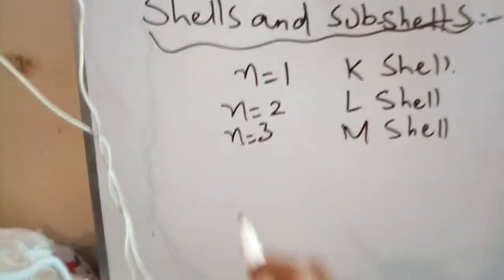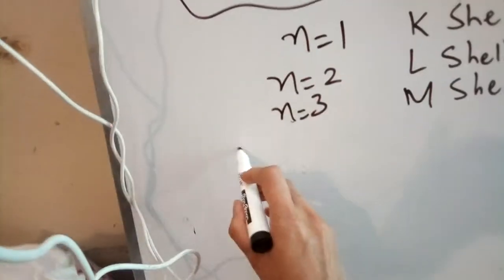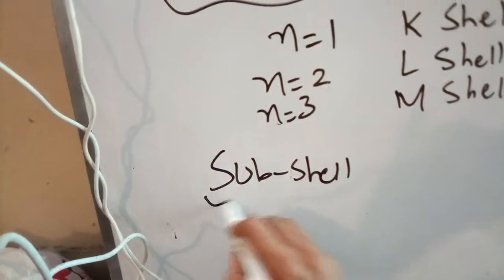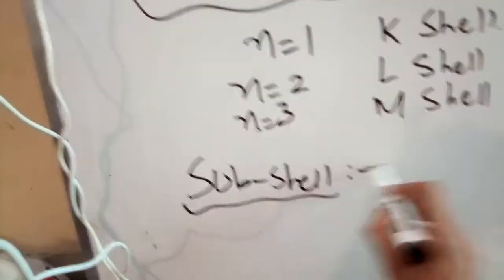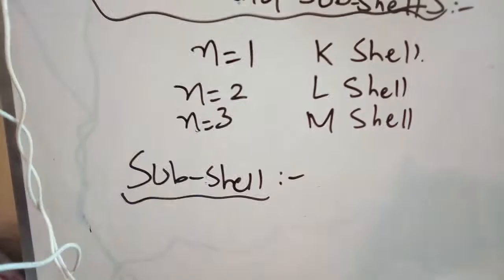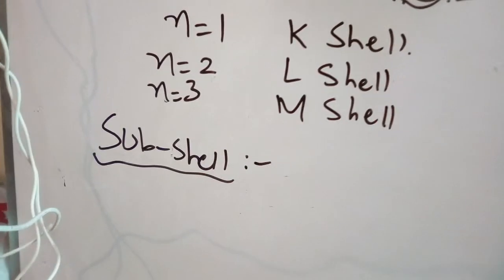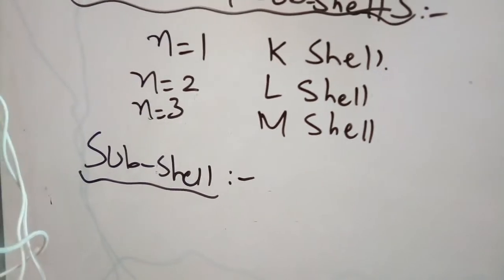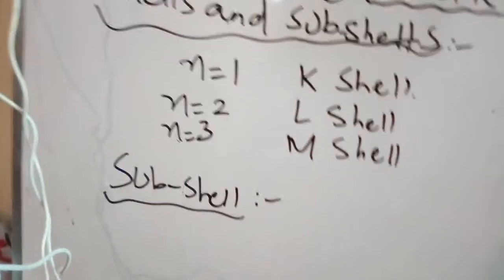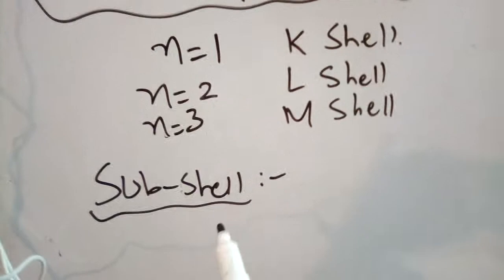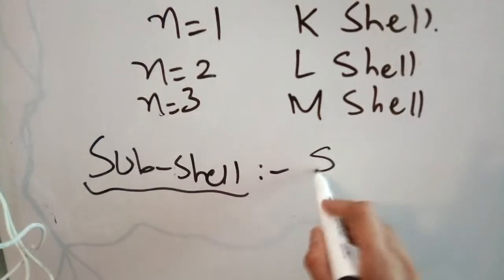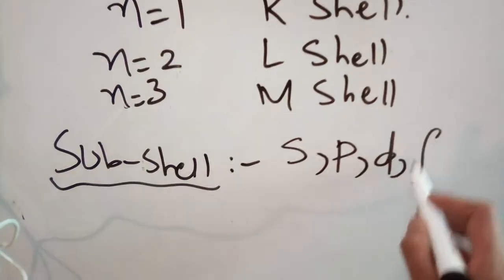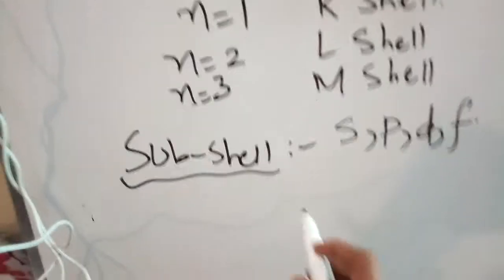Next, we have sub-shells. Each shell is divided into different sub-shells. A shell or energy level is subdivided into sub-shells or sub-energy levels. The sub-shells we have are S, P, D, and F sub-shells.